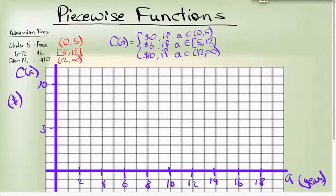The graph. Here I've got our function of cost with respect to age. So I have the cost on the y-axis and the age on the x-axis. Let's put in each piece. Now it costs zero dollars in between zero and five. Now it doesn't include five, so I'm going to put an open dot down here as well. And we would draw a line.